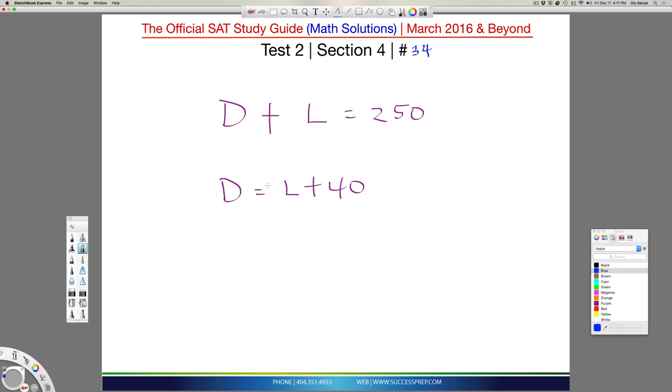Now, what we want to do now is obviously if D is this, I can take this whole term and just slot it right there. So if I do that, I'm going to end up with L plus 40 plus L, because I'm plugging it, I'm rewriting this whole thing, equal to 250.